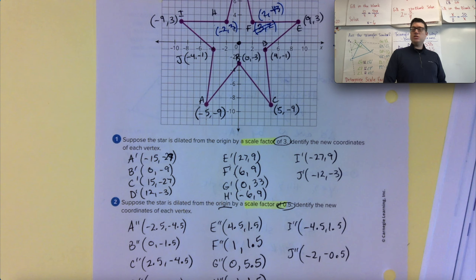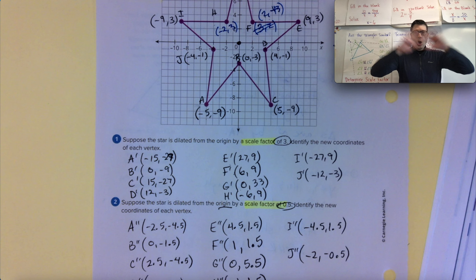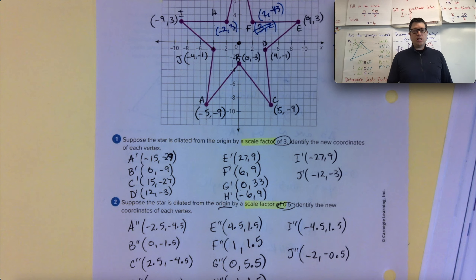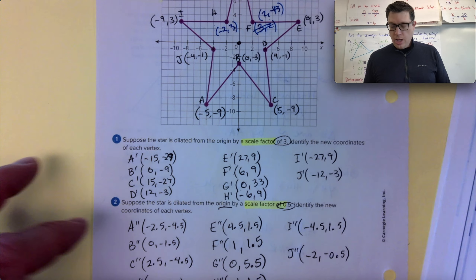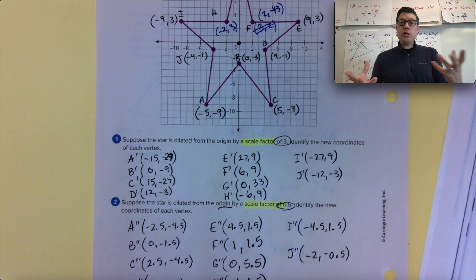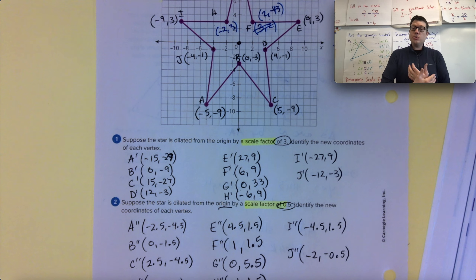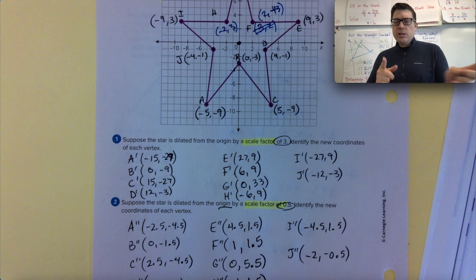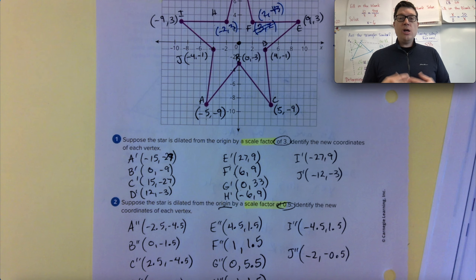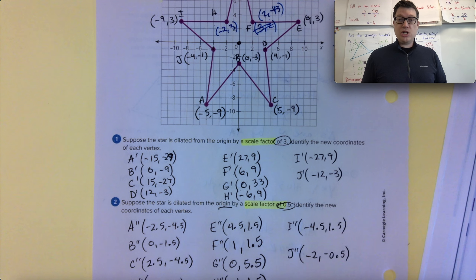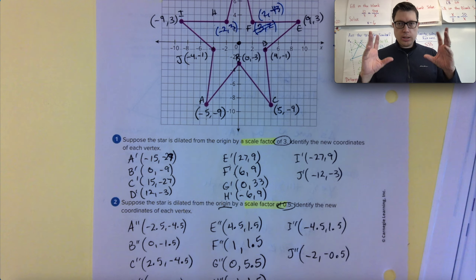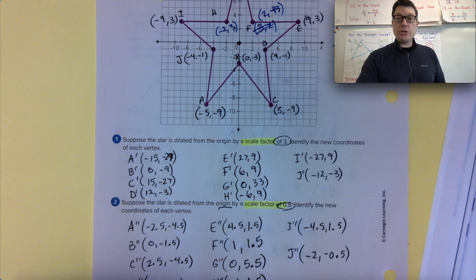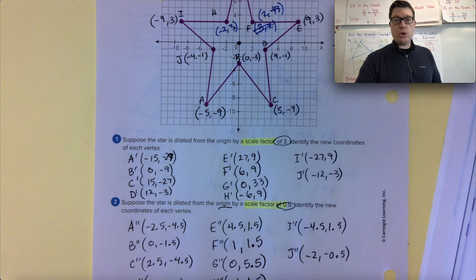Thank you for watching this video. This has been page 456 — all of lesson one is done. Thanks for keeping up with the work. I encourage you to click forward as lesson two is next, and we continue our journey in similar figures, similar triangles, and ultimately leading towards understanding how sine, cosine, and tangent — the concepts of trigonometry — are possible. Thanks for watching. Like, comment, and subscribe. See you in the next episode. Goodbye.